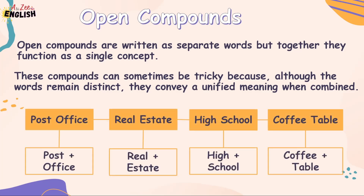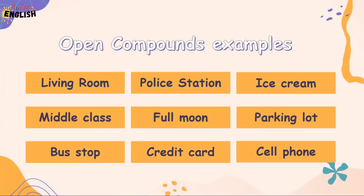For example, post office is a combination of post plus office — post is a different word and office is a different word, but when they combine they function as a single unit. Other examples include: real estate, high school, coffee table, living room, police station, ice cream, middle class, full moon, parking lot, bus stop, credit card, and cell phone.